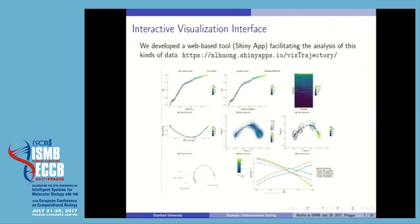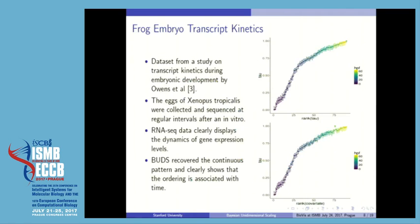Moving on to the visualization part — here I show all the plots that we offer in the visualization interface, which you can check out under this link. I will talk about each individual plot in the next few slides. These plots will refer to the frog embryo transcriptomic kinetic dataset published by Owens and others in their study of frog embryonic development.